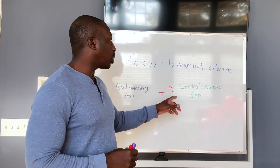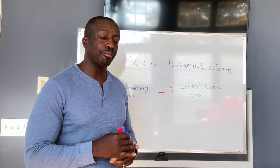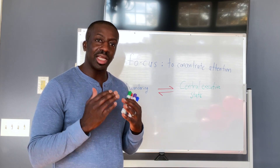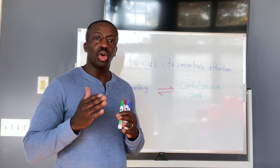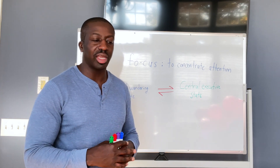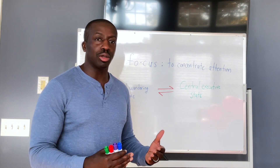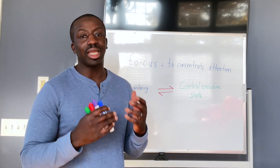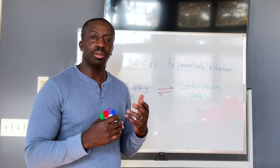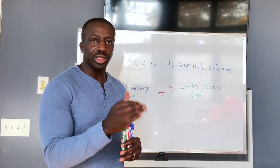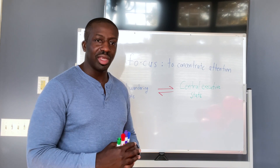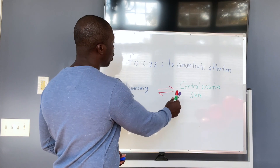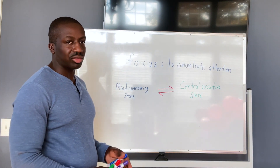The other state is called the central executive state or the central executive network. Many neuropsychologists have described this as the state that takes over and allows us to do goal-directed activities or behavior. For example, if you want your child to do a set of math problems, that requires the central executive network to essentially be in place in order to get that child to sit, focus, and complete the task at hand.